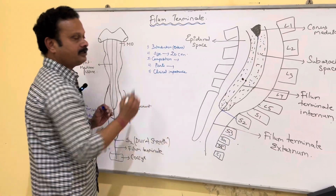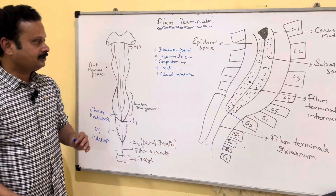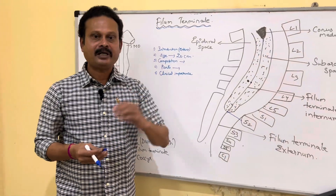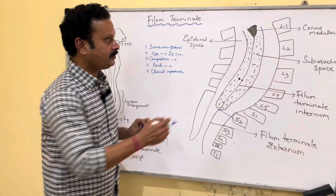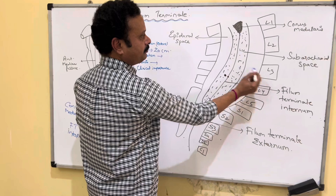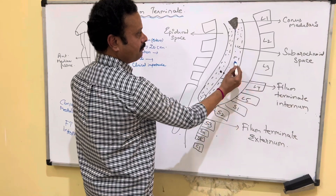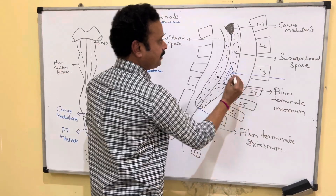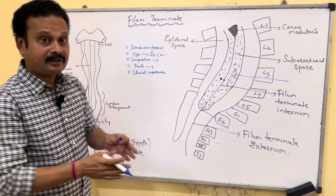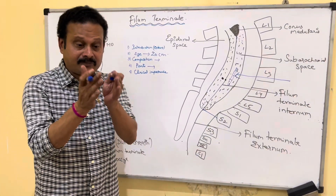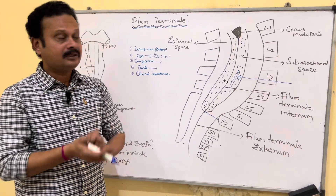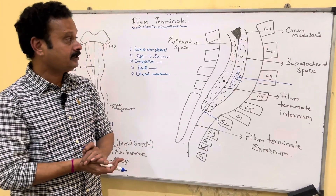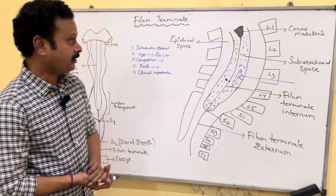One of the most important clinical applications is performing lumbar puncture at the subarachnoid space at the level of L3–L4, where a lumbar puncture needle is introduced into the roomy subarachnoid space, which forms the lumbar cistern there. That is one clinical importance.